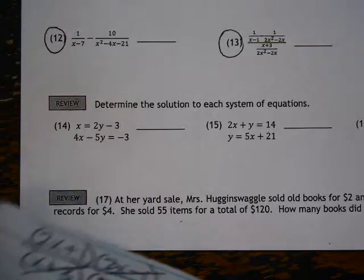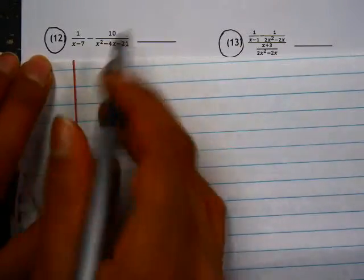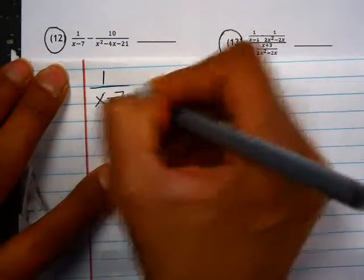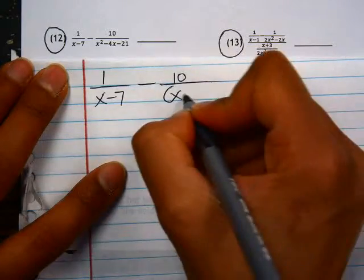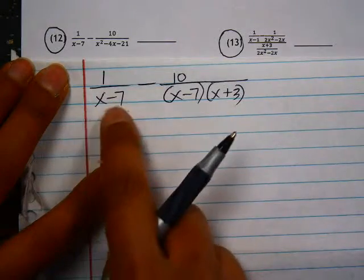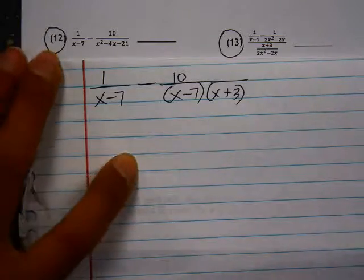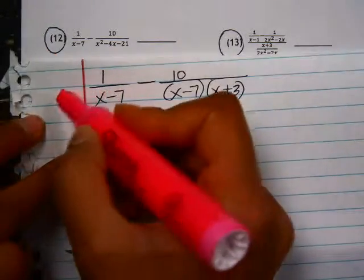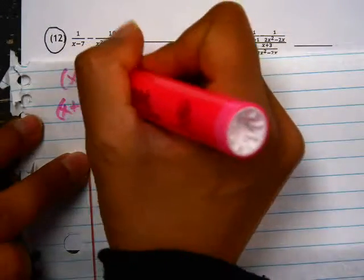Let's look at number 12, which is subtracting rational expressions. When we subtract or add fractions, we need to have a common denominator first. So in order to identify the common denominator, we can factor the second denominator here. This would be x minus 7, x plus 3. So now it's clear that this first fraction is missing a factor of x plus 3. So we're going to multiply this by x plus 3 and multiply the top by x plus 3.